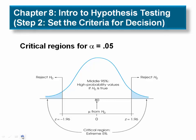In the unit normal table, you can look up a proportion of .0250 in column C, the tail, and find that the z-score boundary is z equals 1.96. Thus, for any normal distribution, the extreme 5% is in the tails of the distribution beyond z equals 1.96 and z equals negative 1.96. These values define the boundaries of the critical region for a hypothesis test using alpha equals .05.